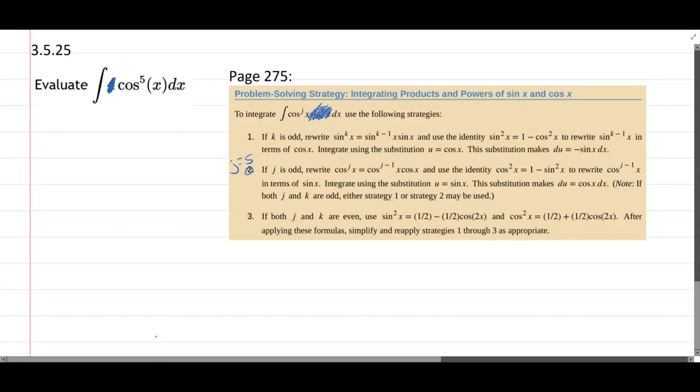We write cos j, so cos to the fifth, as cos to the fifth minus one times cos, which is cos to the fourth. And then we're going to take this cos squared and write it as one minus sine squared. Now we don't have a cos squared, we have cos to the fourth, but squared squared, two times two is four.